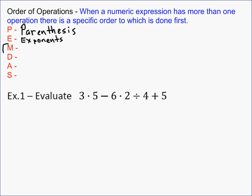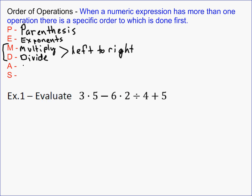The next two you basically do together: multiplying and dividing. When you multiply and divide, you go from left to right — whichever comes first from left to right, that's what you do. Same thing for addition and subtraction. Addition and subtraction come after multiplication and division, and you also do them from left to right.